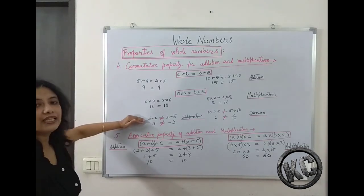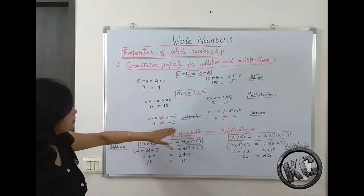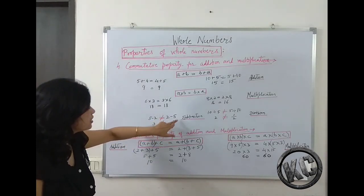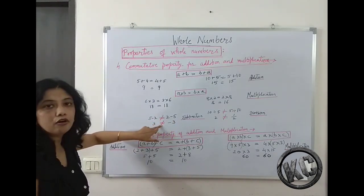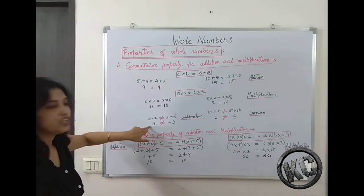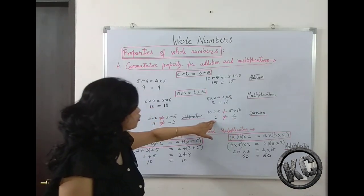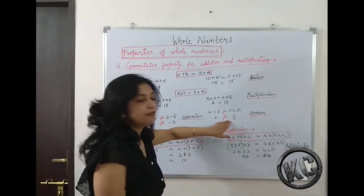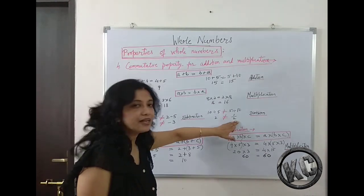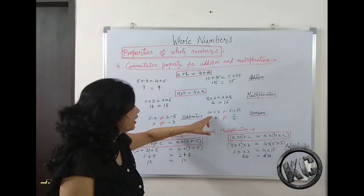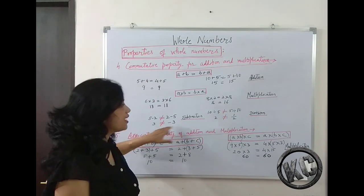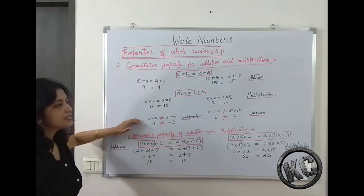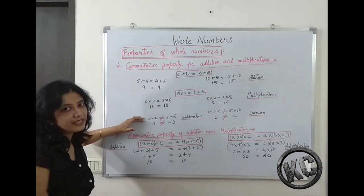But this is not the case with subtraction and division. In subtraction, 5 minus 2 gives 3 but 2 minus 5 gives minus 3 — we cannot change the order. Similarly in division, 10 divided by 5 gives 2 but 5 divided by 10 gives 1/2. Both answers are different. So commutative property is not true for subtraction and division — it is only true for addition and multiplication.